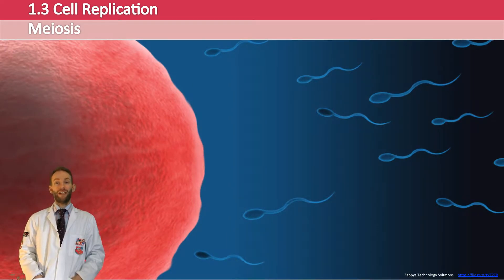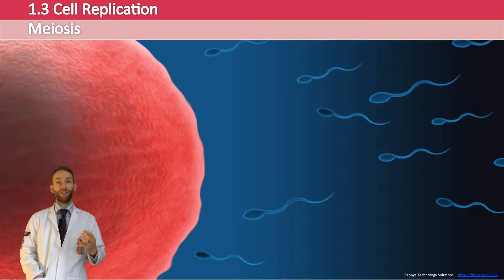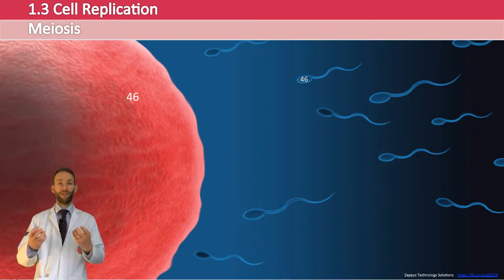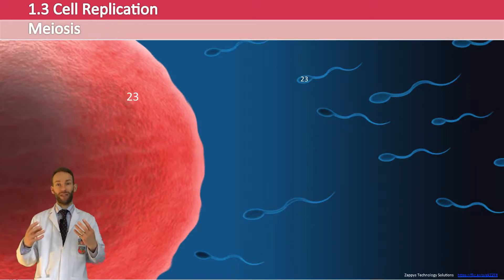Sexual reproduction involves a cell from the male and a cell from the female fusing together in fertilization. Now if both these cells had diploid nuclei — if they both had full complements of chromosomes, two copies of each — then the new cell, once these two cells fused, would have too many chromosomes. For example, in a human, if you had a normal human cell with 46 and another normal human cell with 46 fusing, the new cell would have 92 chromosomes. So that's not going to work.